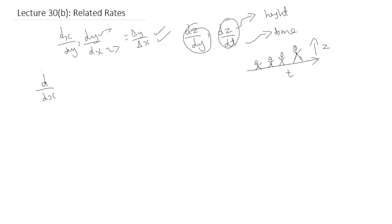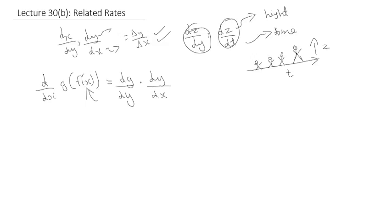If we try to explain this using the chain rule, we differentiate a function g of f of x with respect to x. This can be expressed as the differential of g, the outer element, with respect to y, and then multiplying by dy/dx. We're using a common term y that we first differentiate g with respect to, and then differentiate that variable with respect to x — the value inside the function.